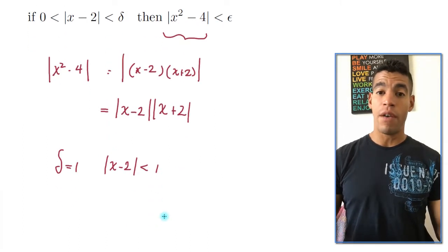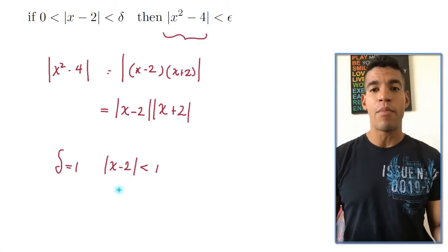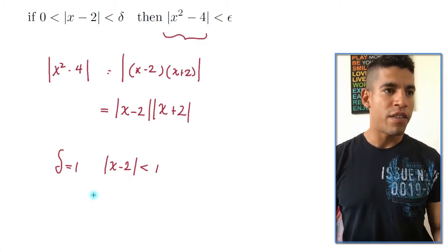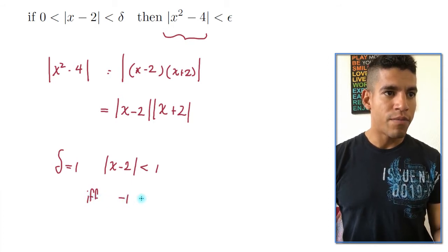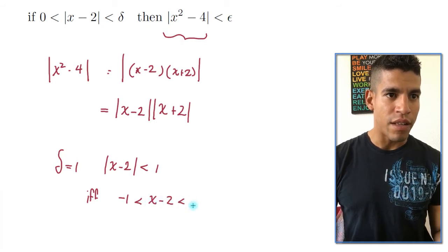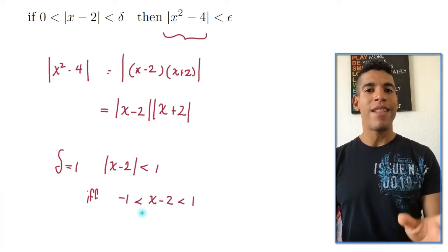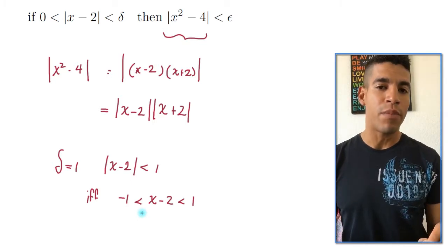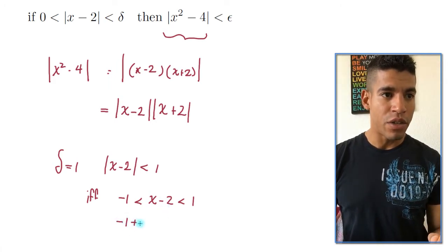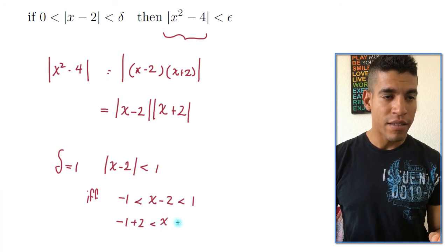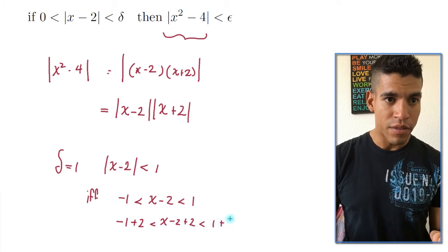And if you saw the first video, how I explained all the properties of absolute value, you know that this can be separated into two inequalities. So this is if and only if negative 1 is less than x minus 2 is less than 1. Now, I want to isolate for x because I want to find the term that's going to give me an upper bound for absolute value of x plus 2. So I'm going to have to add 2.